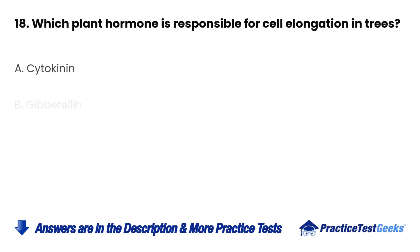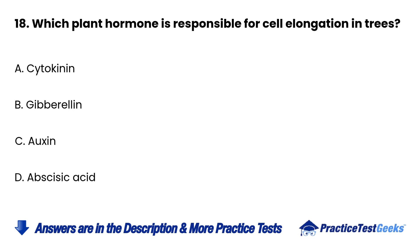Question 18: Which plant hormone is responsible for cell elongation in trees? a. Cytokinine. b. Gibberellin. c. Auxin. d. Abscisic acid.